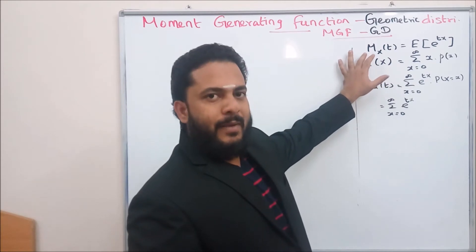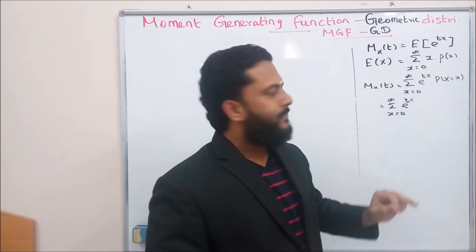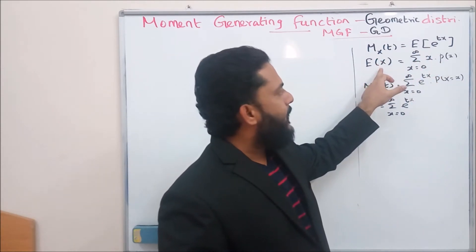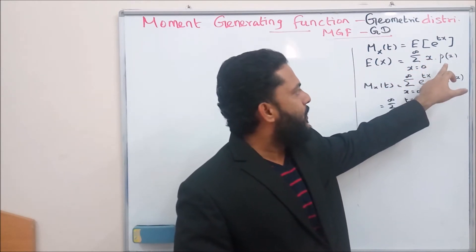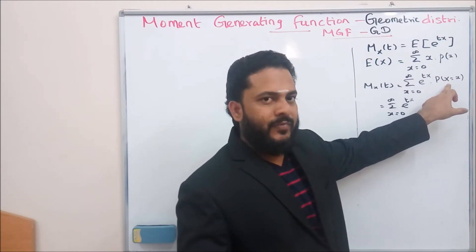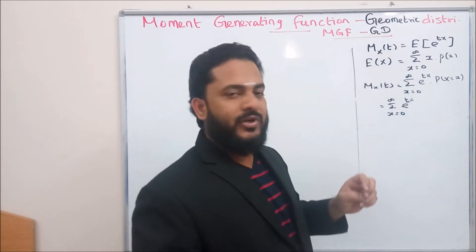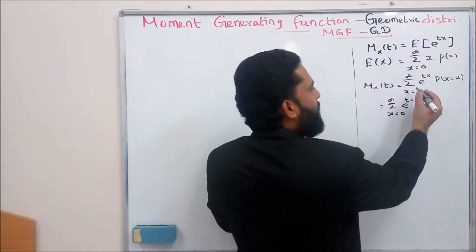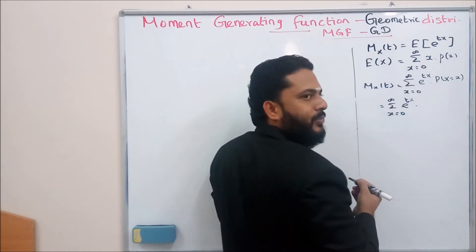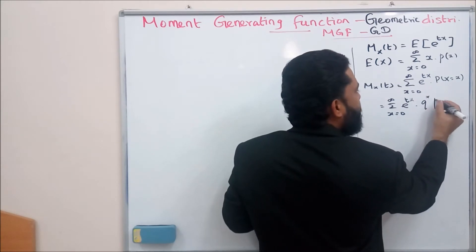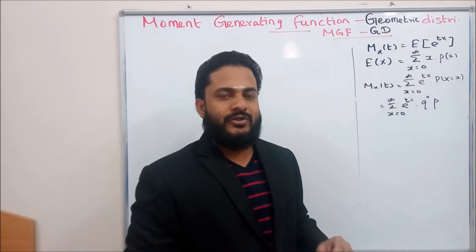The moment generating function mx(t) is given by E[e^(tx)]. Using the expectation rule, this is the summation from x=0 to infinity of x times p(x), where p(x) is the probability mass function of the geometric distribution: q^x times p. So we have the summation from x=0 to infinity of e^(tx) multiplied by q^x into p.